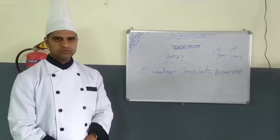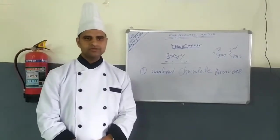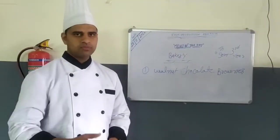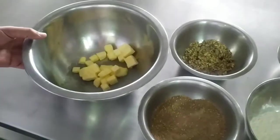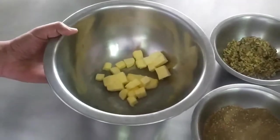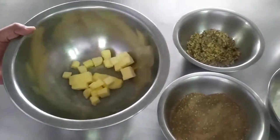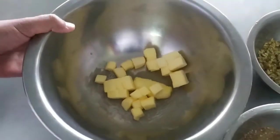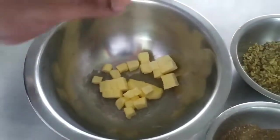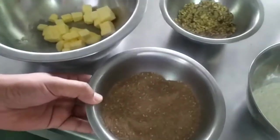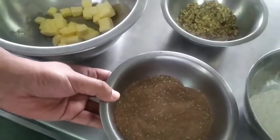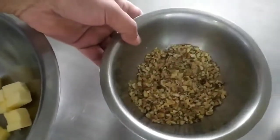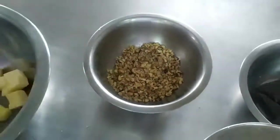I am showing you the ingredients required for making walnut brownies. We have taken 113 grams of butter, 200 grams of brown sugar, and 200 grams of crushed walnut.